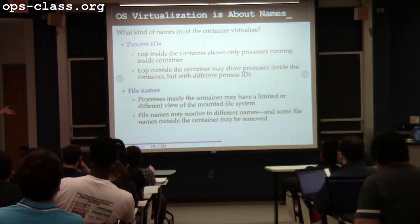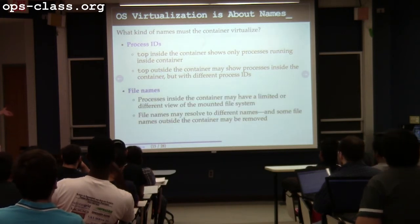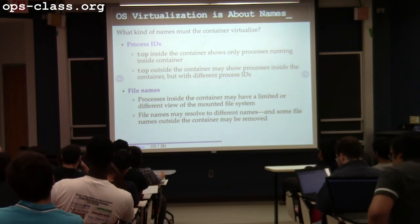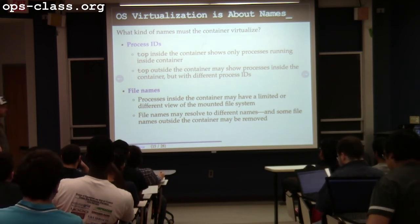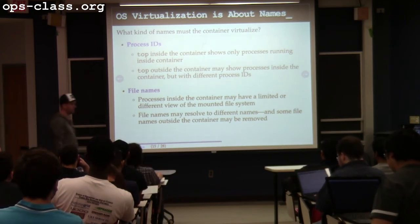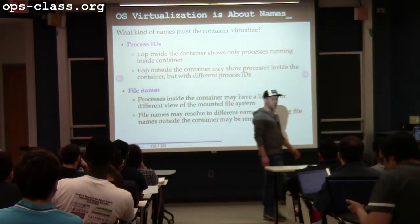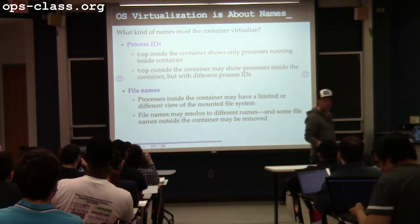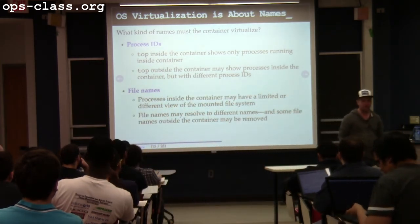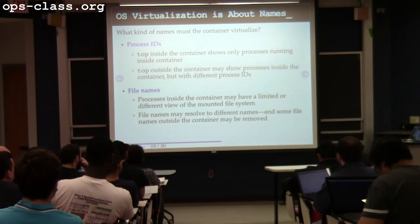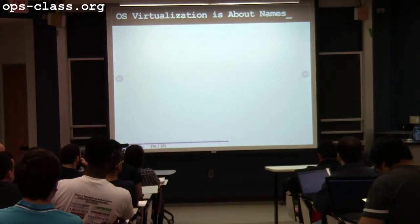File names were brought up: processes inside the container — I want to control their visibility into the rest of the file system. Their names might resolve differently, and some of the outside file system might be hidden from them entirely. They might have files inside the file system not shared outside the container.